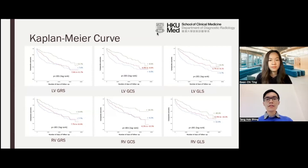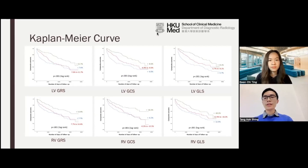Here are the Kaplan-Meier curves by tertiles for event-free survival in all patients. For all strain parameters, log-rank tests showed that patients with values indicating less myocardial strain for GLS and greater myocardial strain for GCS and GRS had significantly higher rates of composite outcome.